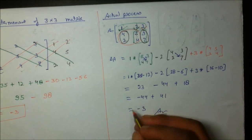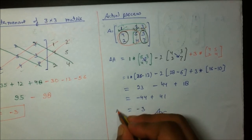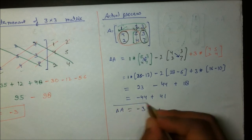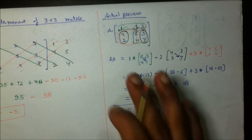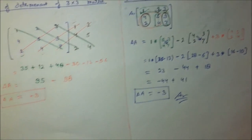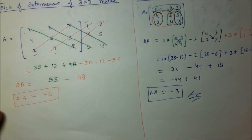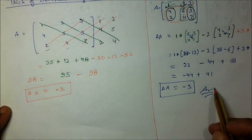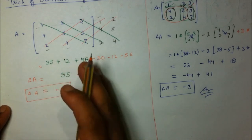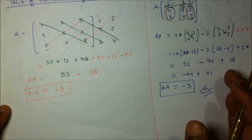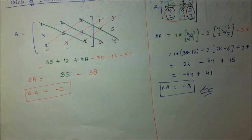The answer is det(A) = −3. Saving time in an examination is very crucial, and I have found the determinant as −3 by both the shortcut trick method and the actual cofactor expansion method. Thank you.